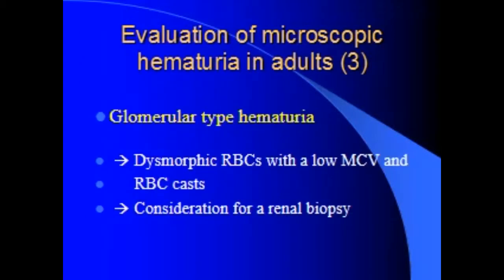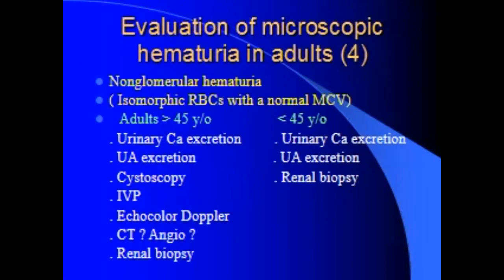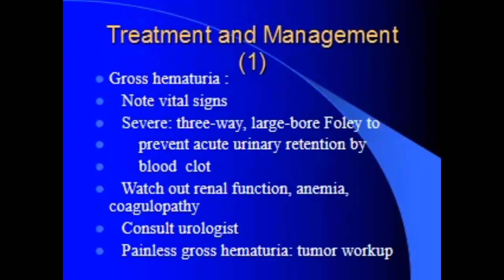Physical examination: vital signs including blood pressure and temperature, flank tenderness, edema, cardiac murmur, hemoptysis, suprapubic discomfort, and genitourinary exam. Laboratory findings: urinalysis for protein, bacteria, casts. Glomerular: RBC casts, dysmorphic RBCs, hypochromic and hypocytic RBCs. Non-glomerular: intact RBCs, normocytic.